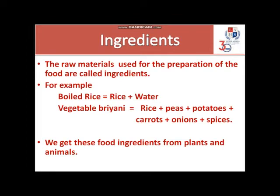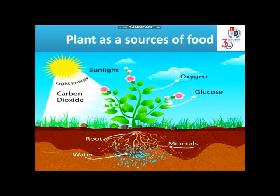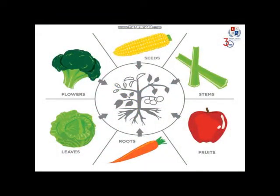We get these food ingredients from plants and animals, which are the major sources of food. Green plants are also called autotrophs because they can make their own food by the process of photosynthesis. In this process, plants take carbon dioxide from the atmosphere and water from the roots, and in the presence of sunlight and chlorophyll present in green leaves, they produce oxygen and glucose. Different parts of plants also serve as a source of food, as shown in the examples on your screen.